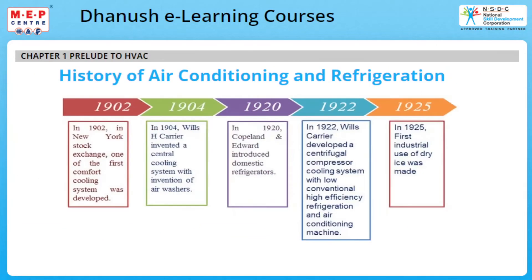In 1902 in New York, at the Stock Exchange, one of the first comfort cooling systems was developed. In 1904, Willis Carrier invented a central cooling system with the invention of air washers. In 1920, Copeland and Edward introduced domestic refrigerators. In 1922, Willis Carrier developed a centrifugal compressor cooling system with low conventional, high efficiency refrigeration and air conditioning machine. In 1925, the first industrial use of dry ice was made.